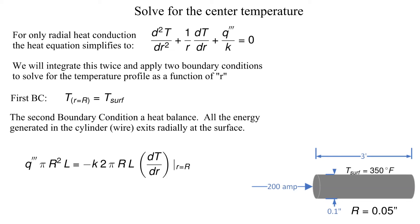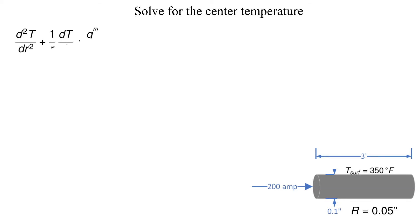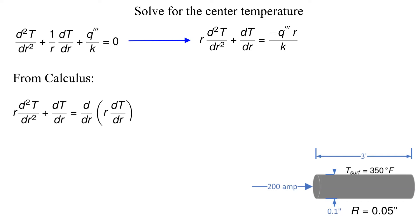This heat balance is shown here. Now let's prepare to integrate. Before we do, let's multiply the heat conduction equation by the radius little r. The chain rule from calculus allows us to simplify the first two terms as shown. This will be the equation we integrate.